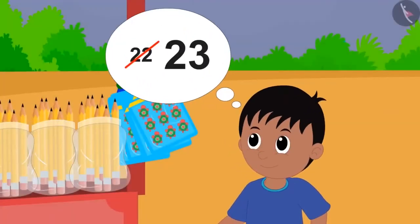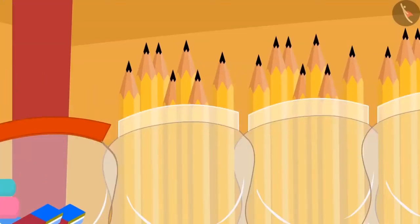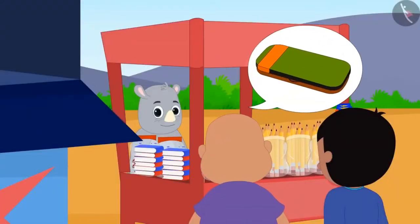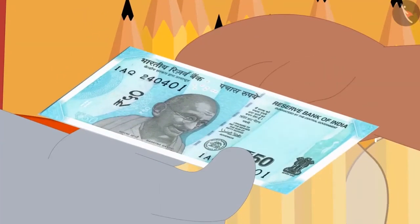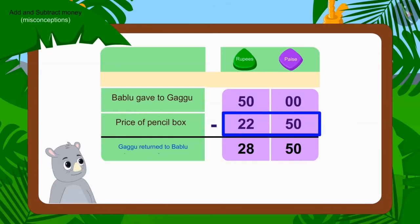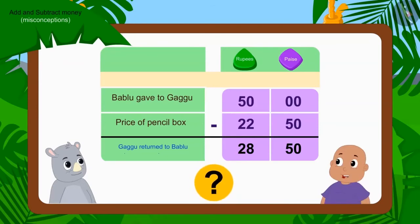Just like you, Raju too caught Gaggu's mistake and gave him 23 rupees. Now, Bablu asked for one pencil box from Gaggu and gave a 50 rupee note. Gaggu deducted 22 rupees 50 paise of the pencil box from 50 rupees and returned 28 rupees 50 paise. Children, has Gaggu returned the right amount to Bablu? Let's see.